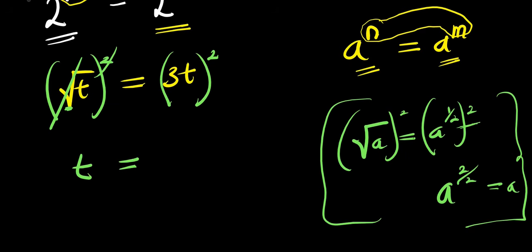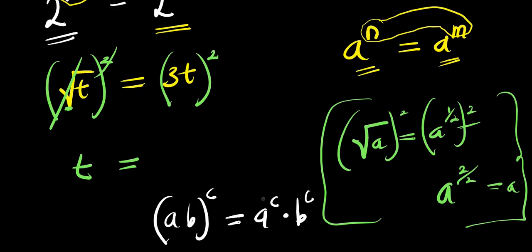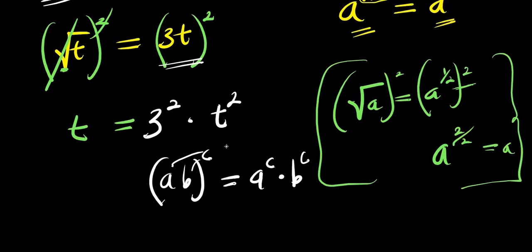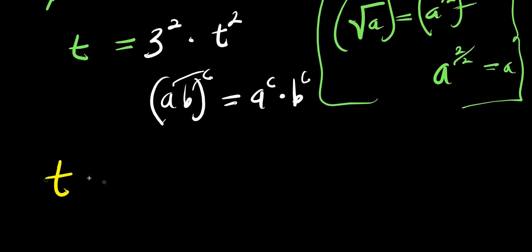On the right side, using the identity (a times b) to the power of c equals a to the power of c times b to the power of c, you can distribute the exponent. So (3t)² gives you 3 to the power of 2 times t to the power of 2. That means we have t equals 3 squared, which is 9, times t squared.